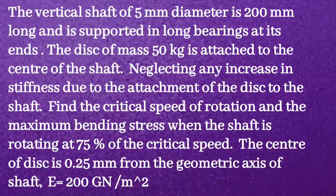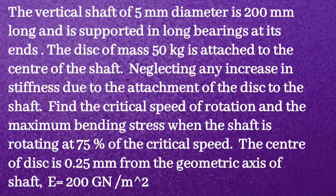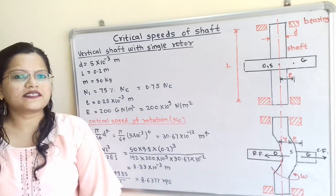Given problem: A vertical shaft of 5 mm diameter and 200 mm length is supported in long bearings at its ends. A disc of mass 50 kg is attached at the center of the shaft. Neglecting any increase in stiffness due to the disc attachment, find the critical speed of rotation and the maximum bending stress when the shaft rotates at 75% of the critical speed. The center of the disc is 0.25 mm from the geometric axis. E = 200 GN/m².